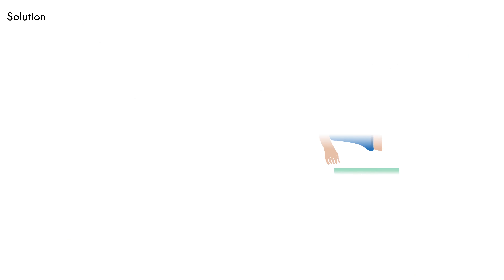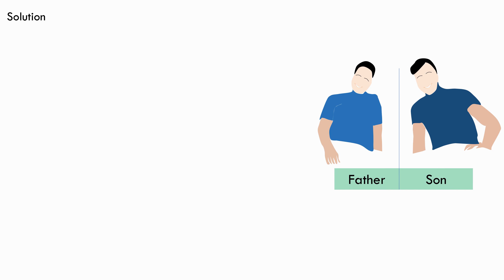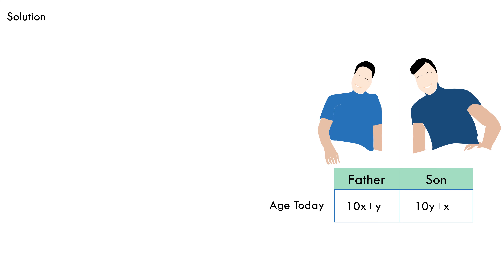The very first thing we'll have to do is assume their ages today. Let the father's age today be 10x plus y, and the son's age today be 10y plus x. This is because switching the tens and ones digit of the father's age gives the son's age. Here, x and y are digits from 0 to 9.